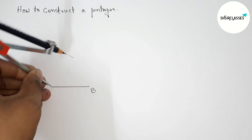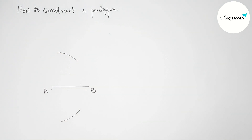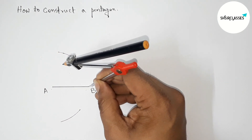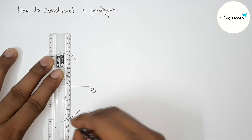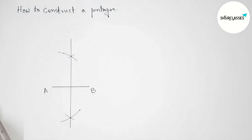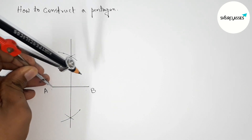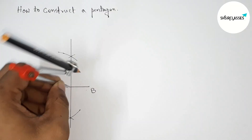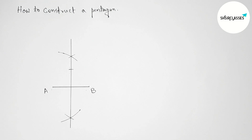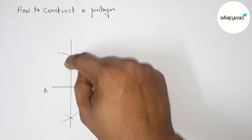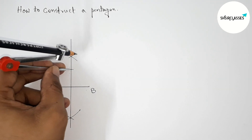Next, taking the length AB with the compass. Drawing an arc here and drawing an arc again with the same length. Putting the compass on point B and cutting here and here. Now joining this line to find the middle point of AB. Taking the length from point A to this intersection point and putting the compass here, cutting here.